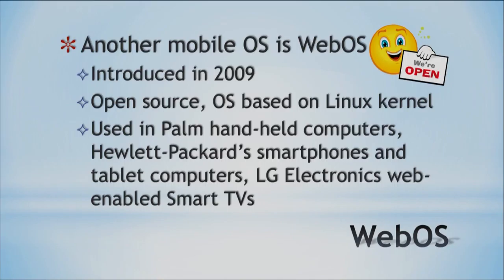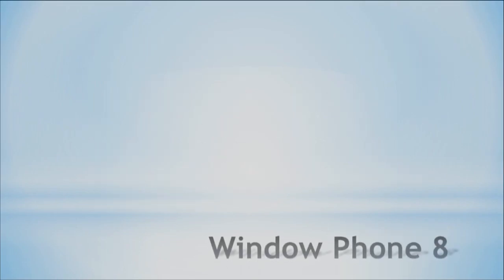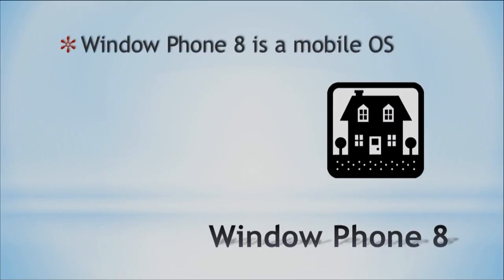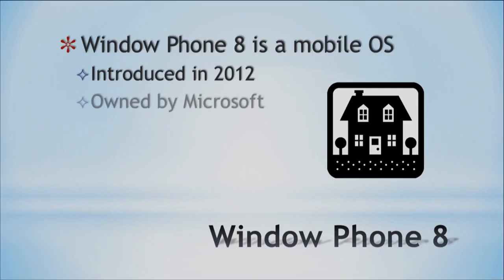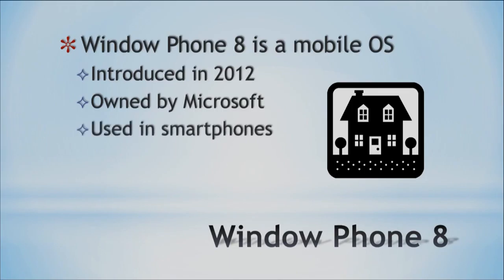Our next operating system might be from a company you're familiar with — Microsoft. They have Windows Phone 8, which came out in 2012. It's owned by the pretty large company Microsoft, which got famous through the operating system they created. It's used in smartphones. That covers the major mobile operating systems out there.